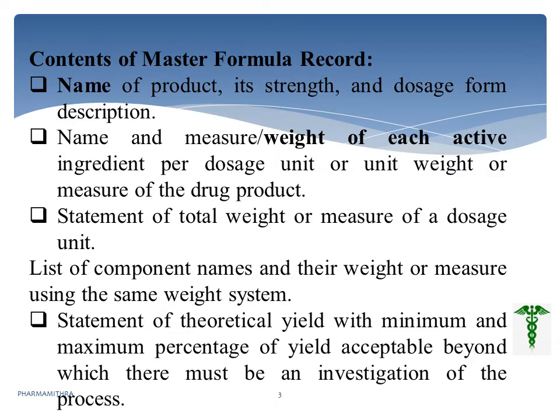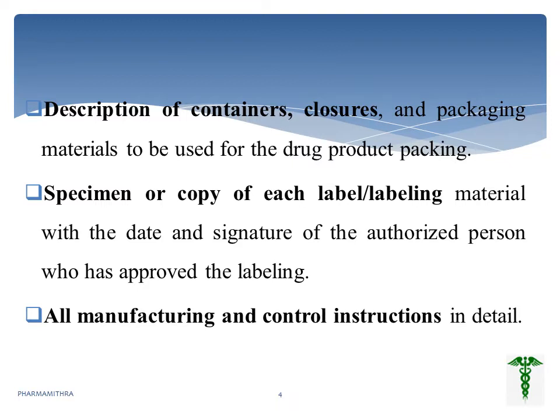The MFR starts with the name of the product, its strength, and dosage form description, followed by the measure or weight of each active ingredient. Then it includes a statement of the total weight, component name, and the theoretical yield with minimum and maximum percentage, so that the next investigator will get a clear idea. It also includes the description of the container, closures, or packing material that can be used for the product packing.